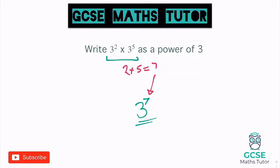So our quick little rule here: when we're multiplying with powers, we can add the powers together. This only applies, however, if the base numbers are the same. And that word base number — if I write this question out, three to the power of five, three to the power of two — this three here is the base number. So because they're the same, we could just add the powers together.